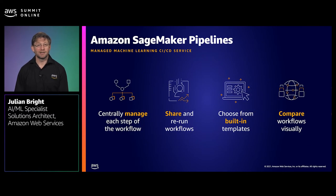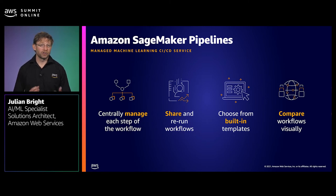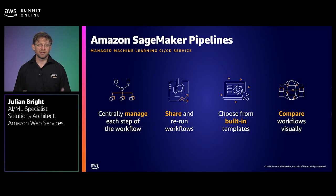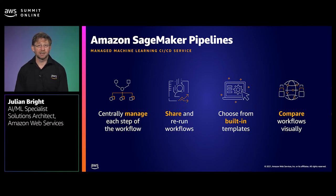Amazon SageMaker Pipelines is an ML CI/CD service accessible to every developer and data scientist. SageMaker Pipelines brings CI/CD pipelines to ML, reducing the months of coding required to manually stitch together different code packages to just a few hours. With just a few clicks in SageMaker Pipelines, you can create an automated machine learning workflow. SageMaker Pipelines takes care of all the heavy lifting involved with managing the dependencies between each step of the workflow and orchestrates them so you can scale to thousands of models in production. To help you get started quickly, SageMaker Pipelines offers pre-configured templates for model building, model deployment pipelines, and also provides the ability to customize templates, as we will see in our demo.